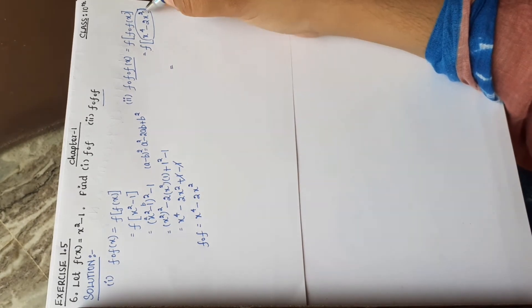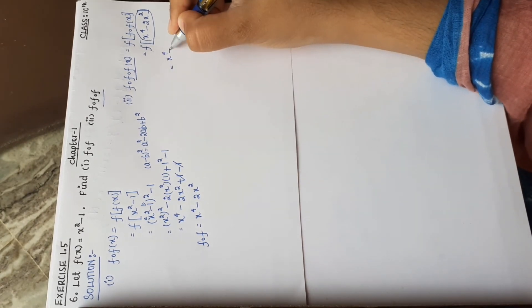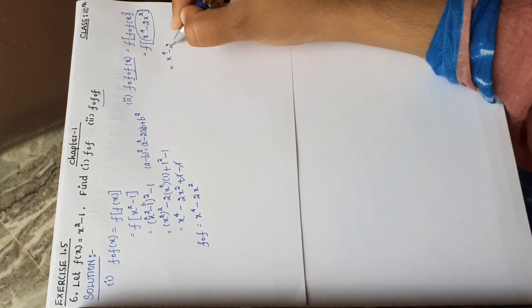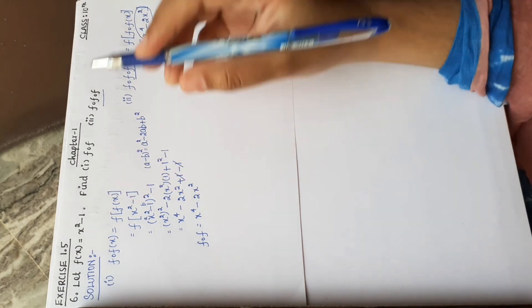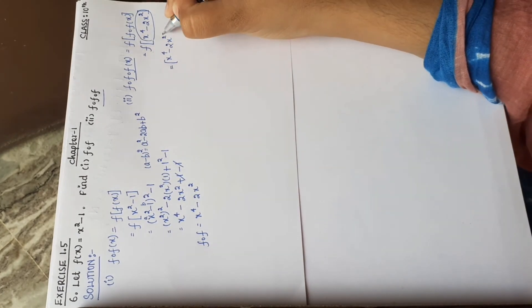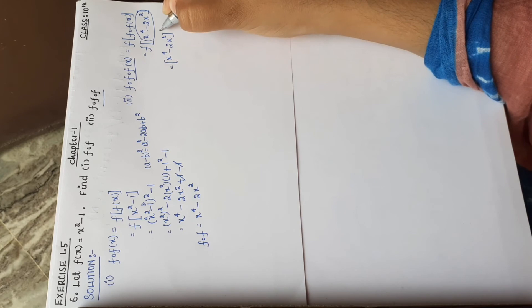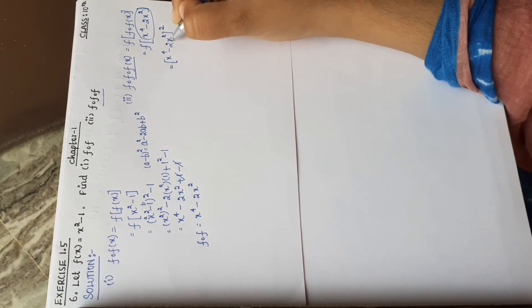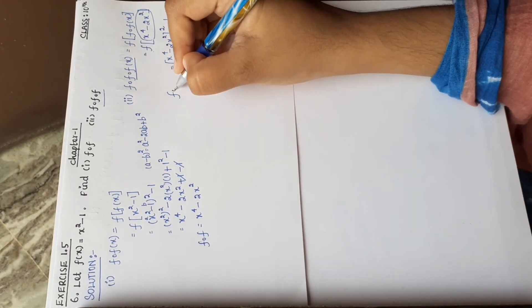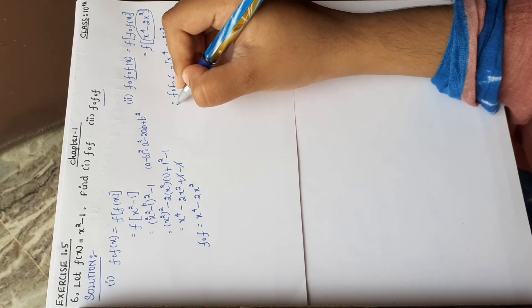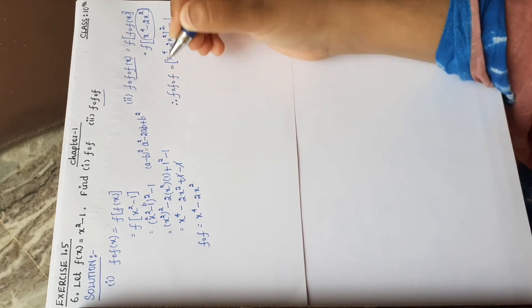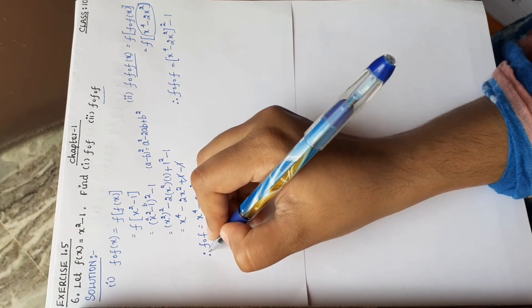f of x is equal to x squared minus 1. So x is equal to x power 4 minus 2x squared. That is all.